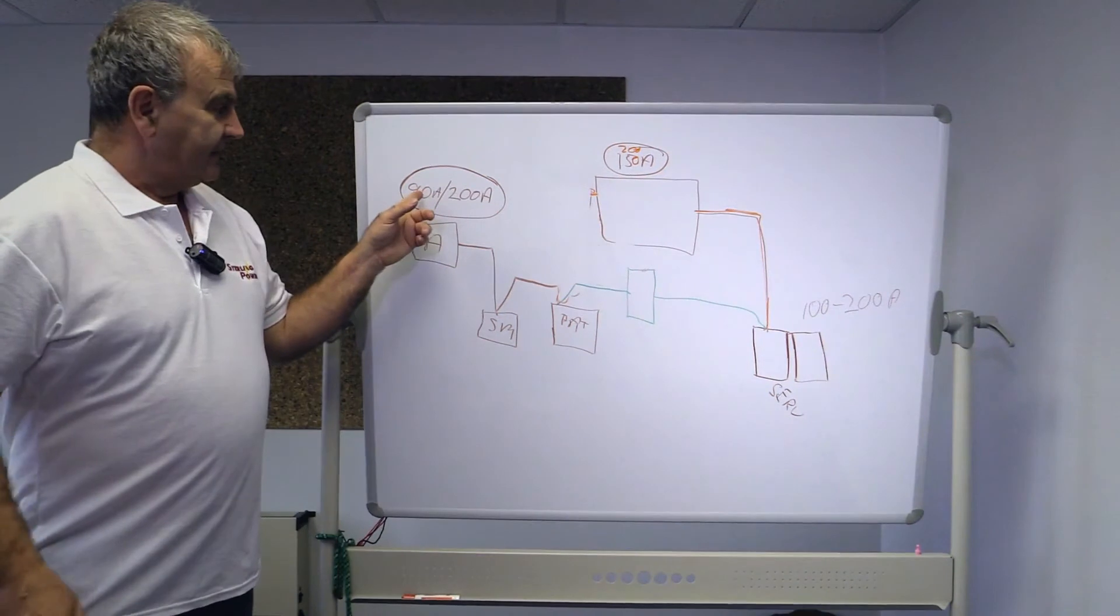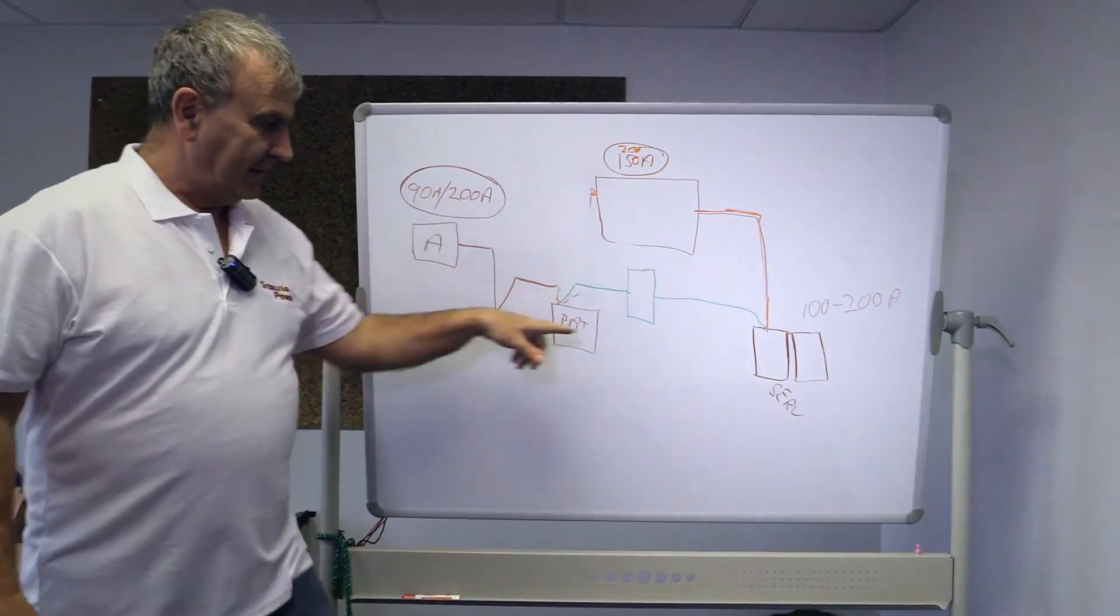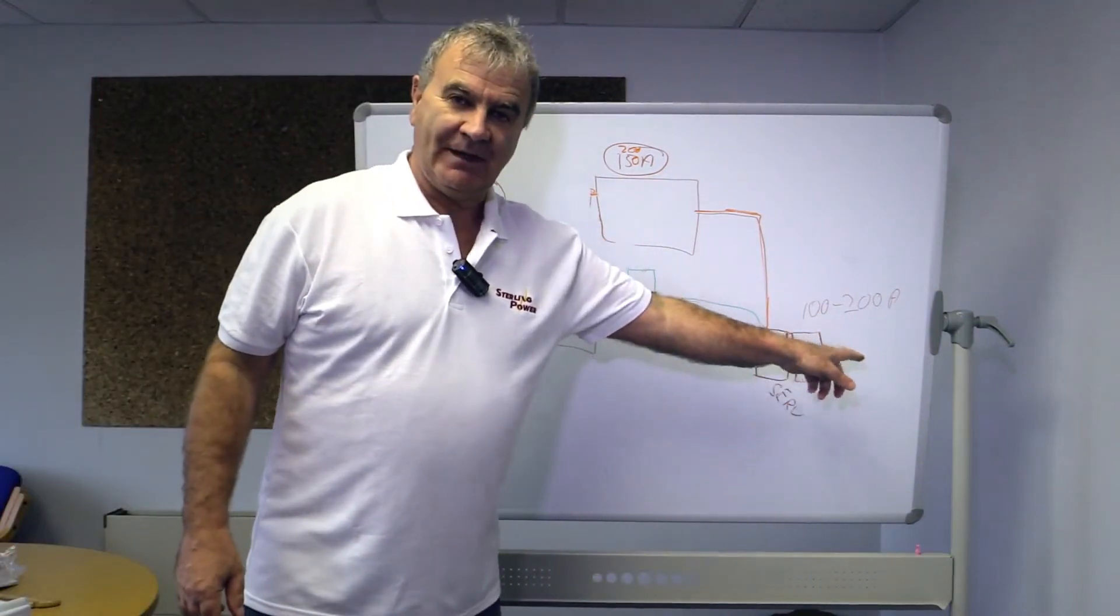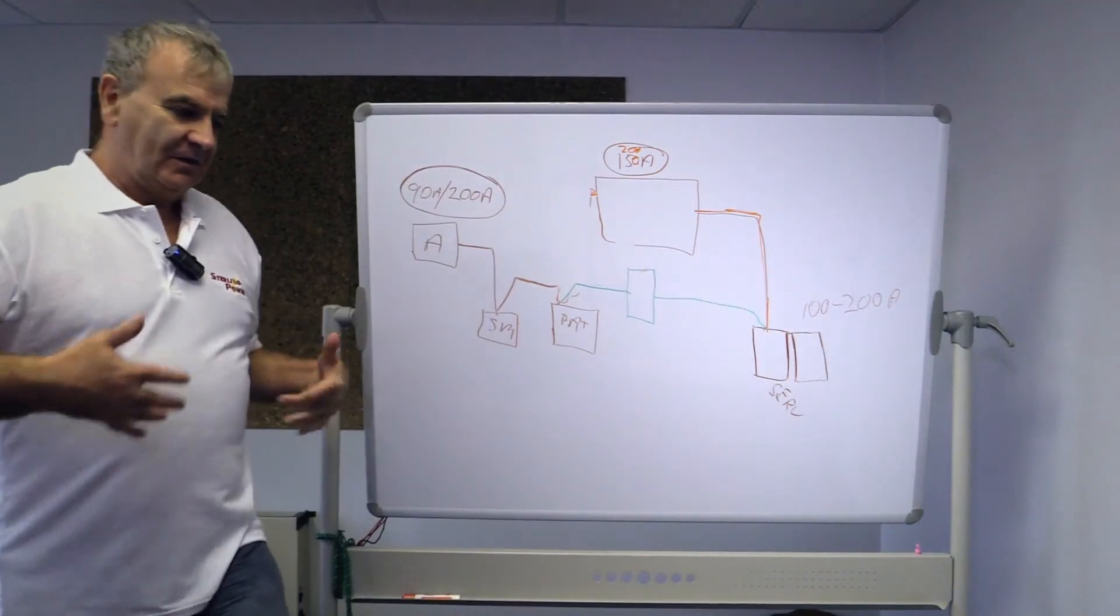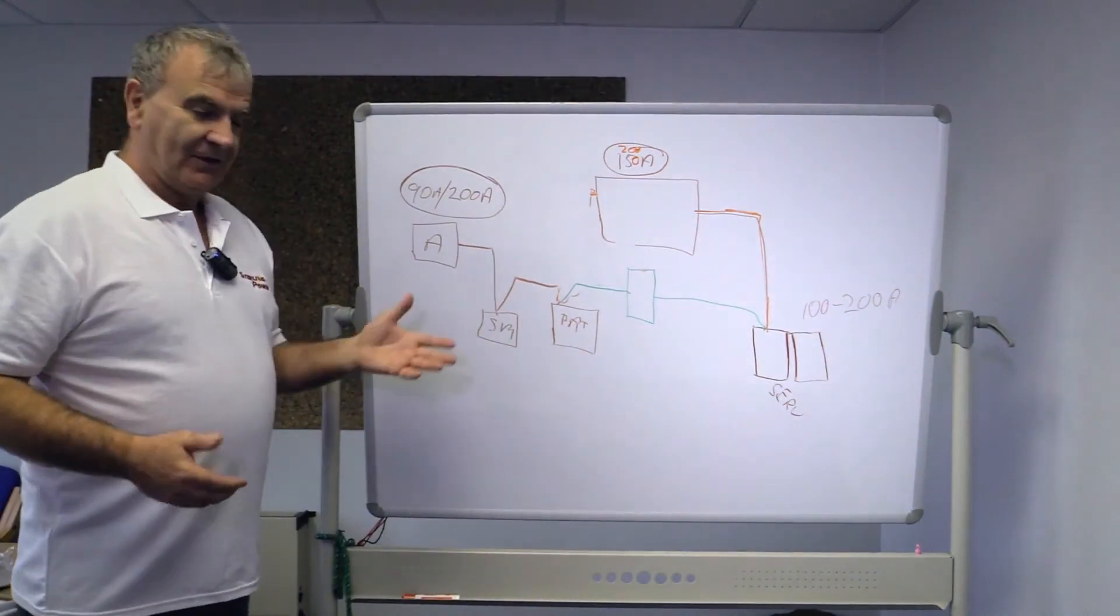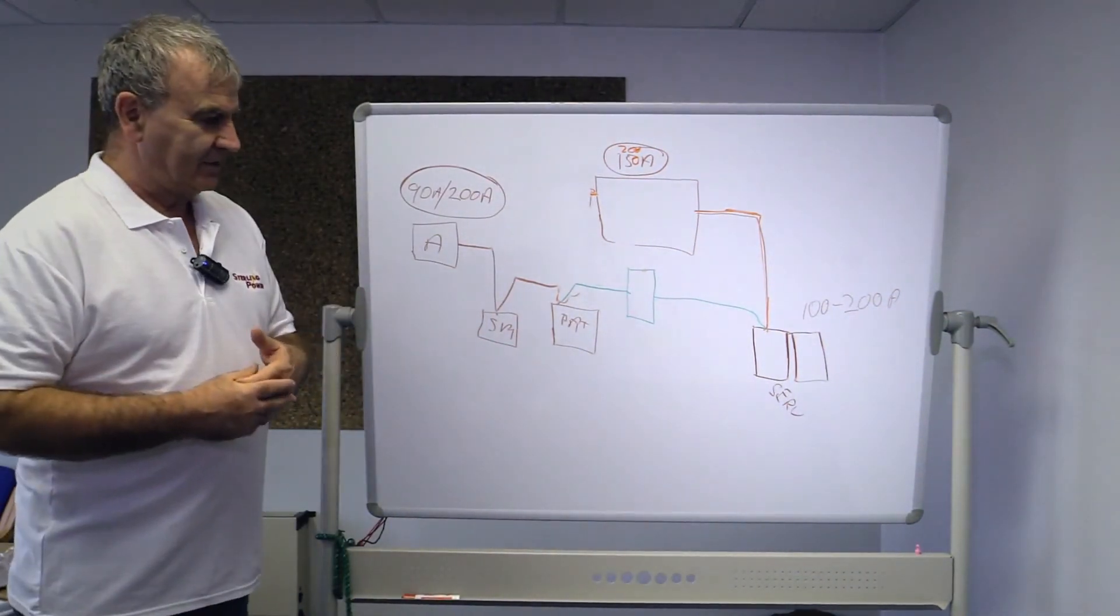Now we also do 120 amps and the new models coming out will go up to 240 amps. So depending on the size of alternator you have here and depending on you might have 400 amps of batteries there, you can put a larger unit on than 60 or 120 amps. It's up to you.